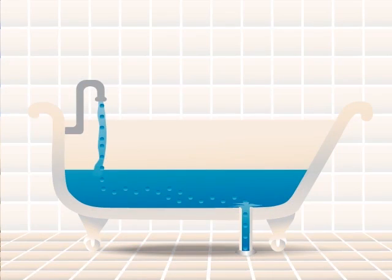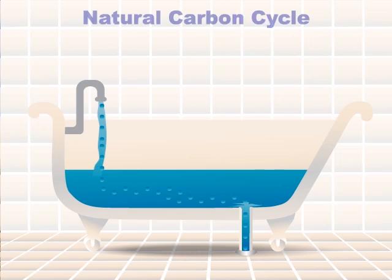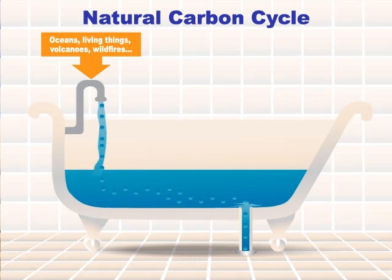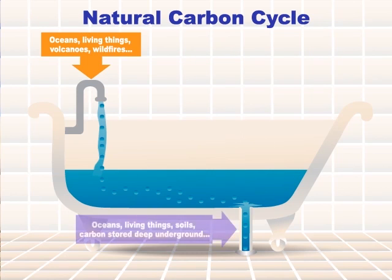Here's another way to think about it. Imagine the atmosphere is like a big bathtub, and carbon dioxide is the water. In the natural carbon cycle, the amount of carbon dioxide that goes into the atmosphere is balanced by the amount that goes out.